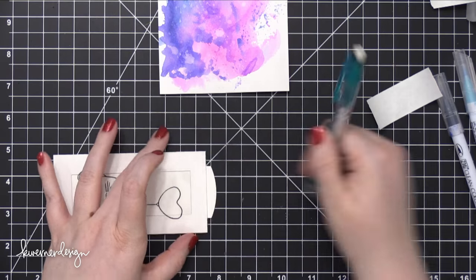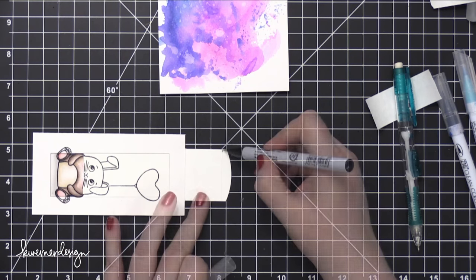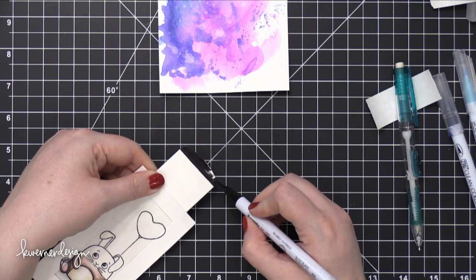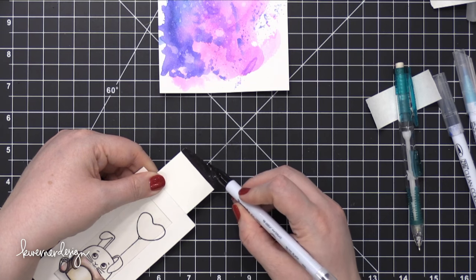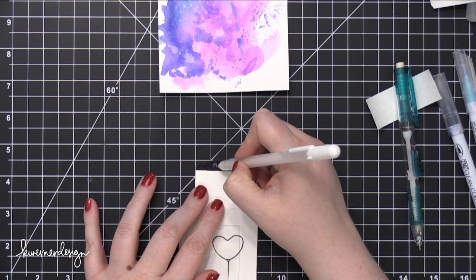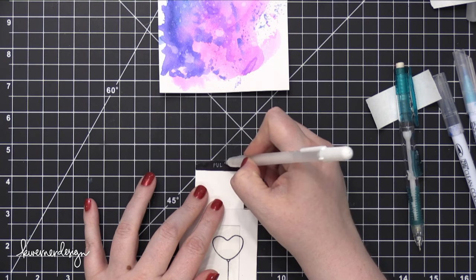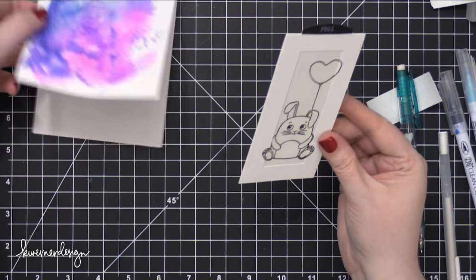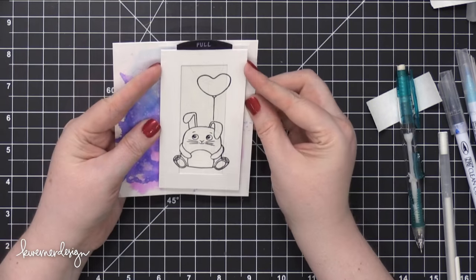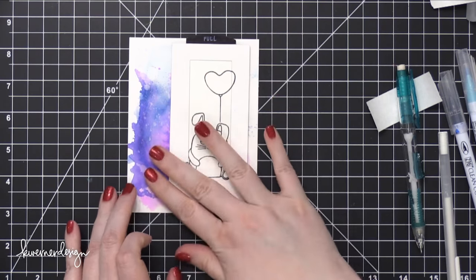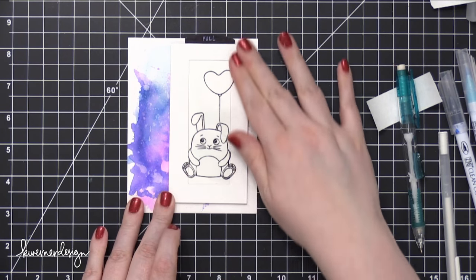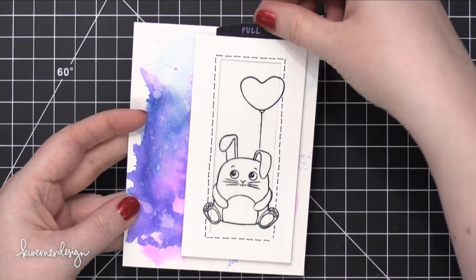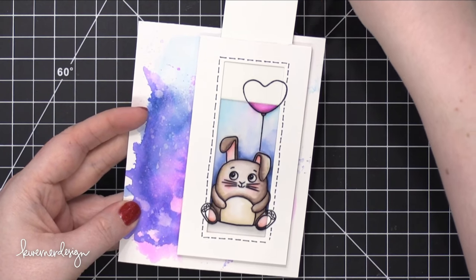So I decided to add a little bit of color to the slider mechanism. I just drew a line where that sticks out the top, and then I used a black marker, the same Zig Clean Color Real Brush Markers, and colored that in. After that was colored, I used a white Jelly Roll pen just to write the word pull on top. This is going to make sure that the person who receives this card knows what to do in order to reveal the colored area. So I put this on foam adhesive just so it sticks up off the front of the card, so it's a little bit easier to pull that tab. Glued that down. Then I took a black Sharpie marker, the same one I used on the balloon earlier, and put a stitched line around the frame.